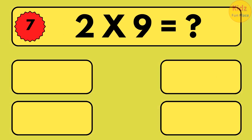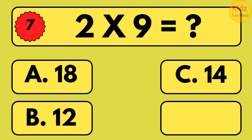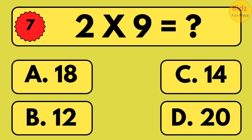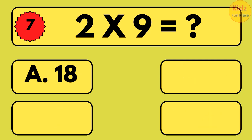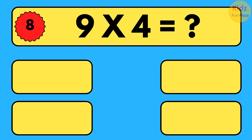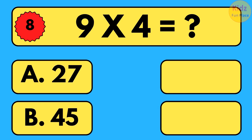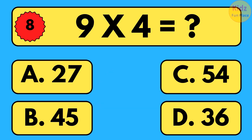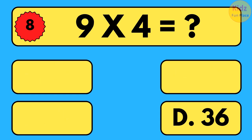2 times 9 is equal to what? 2 times 9 is equal to 18. 9 times 4 is equal to what? 9 times 4 is equal to 36.